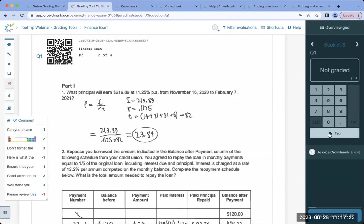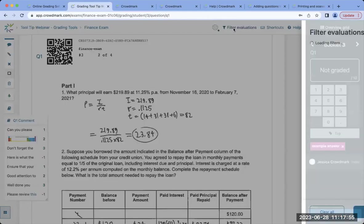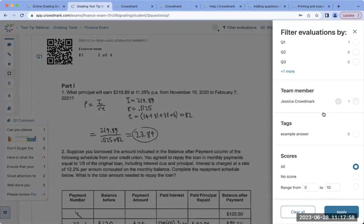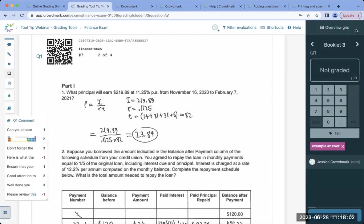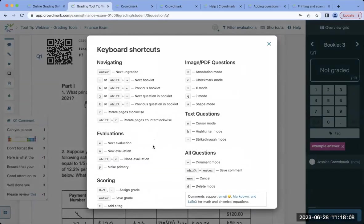You also have the option here to tag a booklet. This is something that is not visible to students, just the grading team. So if there is an example answer or if, for example, a TA has a question about an assessment, they can tag it for other team members. And that allows you to easily locate the question or the booklet. You can also filter evaluations by questions, team members, tags and scores. And you also have some keyboard shortcuts that are available for you as well to quicken the speed of grading.